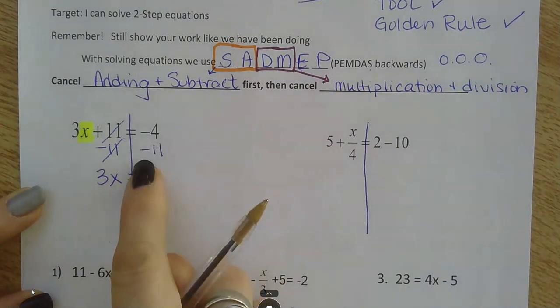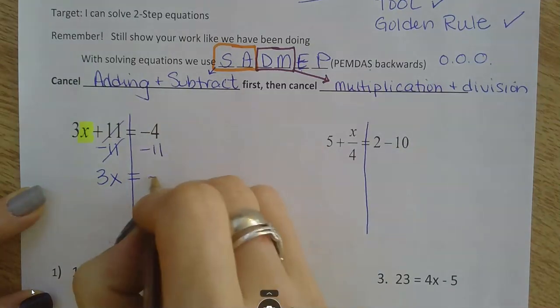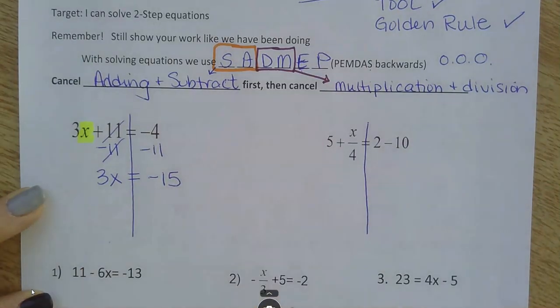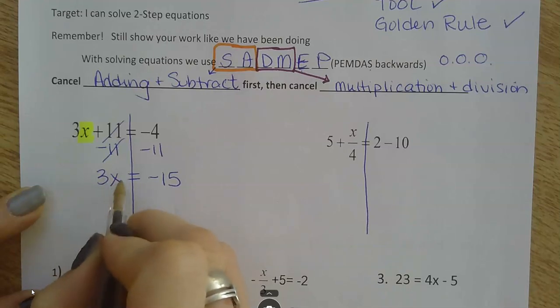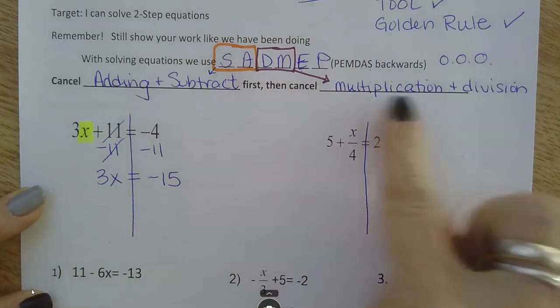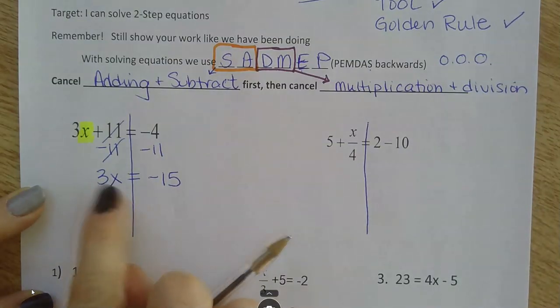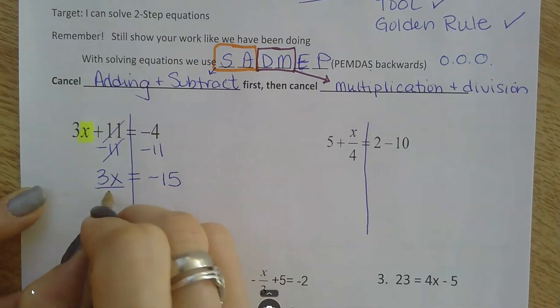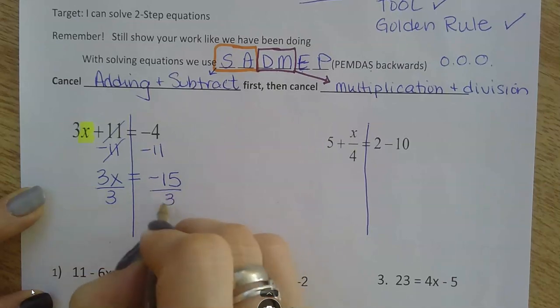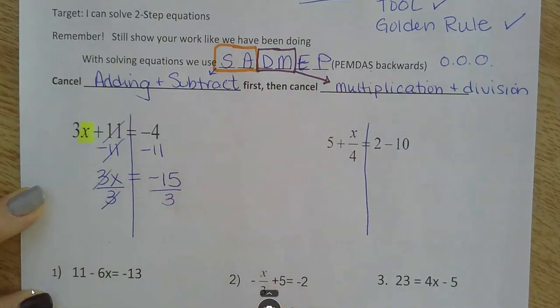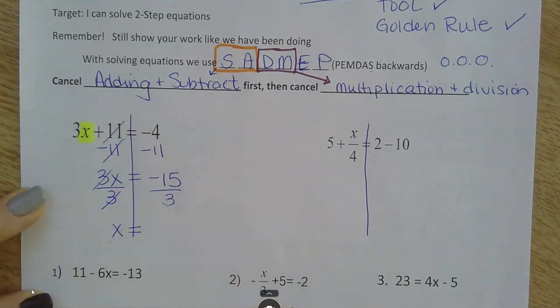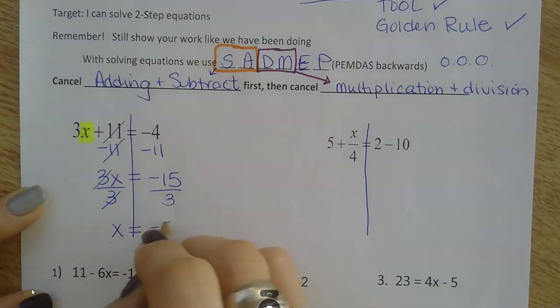Well, negative 4 and negative 11 put together make negative 15. I'm still trying to get this x by itself. So, now I'm ready to cancel out any multiplication or division. This is 3 times x. So, to cancel out multiplying by 3, I'm going to divide by 3. Those 3's cancel out. And, now I have x by itself. And, I get negative 5.